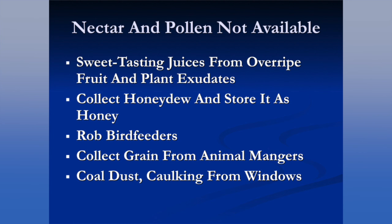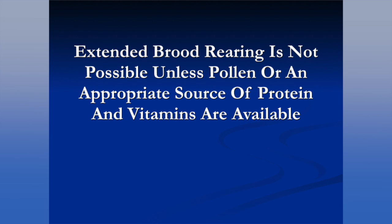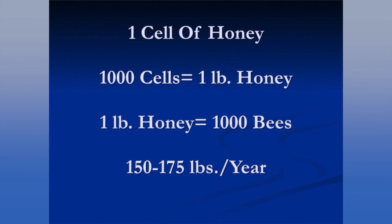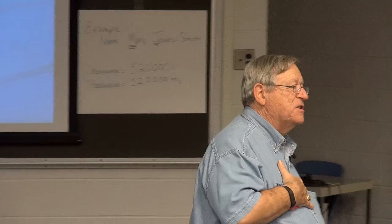Bees will also visit animal grain mangers, coal dust, and caulking from windows. It should be evident that extended brood rearing is not possible unless pollen or an appropriate source of protein and vitamins is available. They can live on pure carbohydrates for an extended period, but cannot use pollen as an energy source. It takes a pound of pollen to produce about a thousand bees, and estimates are that 150 to 175 pounds of honey are needed for maximum reproduction in a hive over the course of the year, plus another 75 to 125 pounds for the beekeeper.